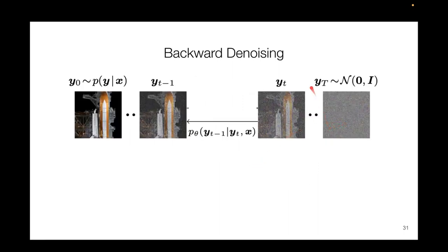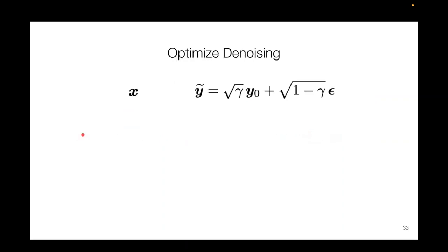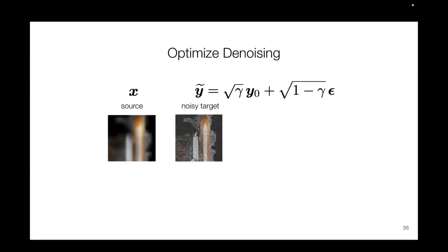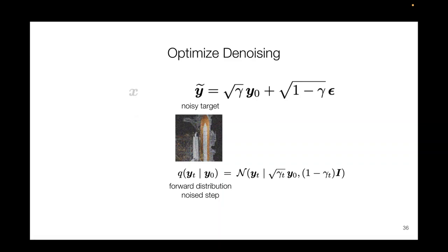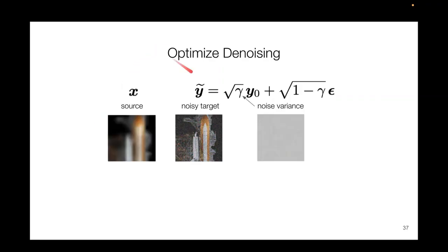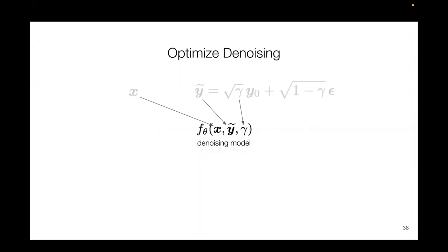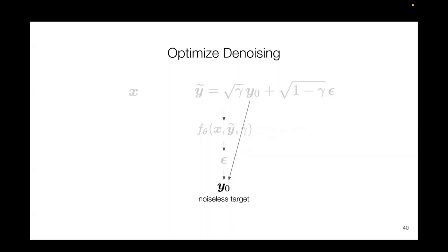In backward denoising, we begin at Y_T, which is noise, and use the data distribution to recover a sample, conditioned on X, that low resolution input, so the output is consistent with it. Given the source input image X and a noisy target resolution image, this noisy target is comparable with the forward diffusion latent definition. We obtain gamma, the noise variance term, and give our neural denoising model this information. It predicts the noise vector and hopefully yields the noiseless target resolution sample.